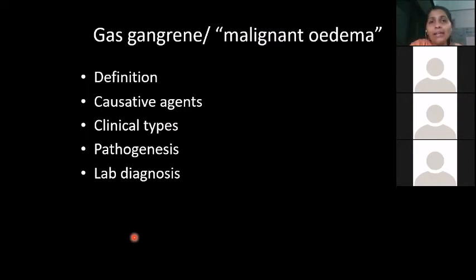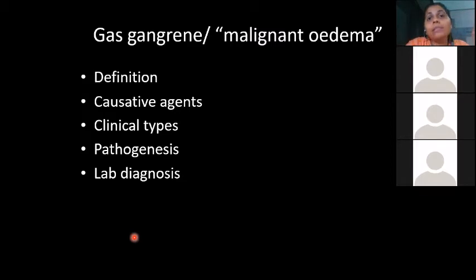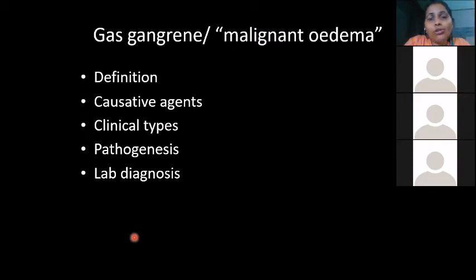Another synonym for gas gangrene is malignant edema. The term comes from the clear-cut swelling that spreads — toxins gain entry into the blood, leading to septicemia. Just as malignancy is most often fatal, gas gangrene, if not controlled in time, is generally fatal. That is why it is called malignant edema.